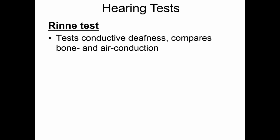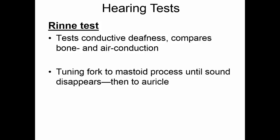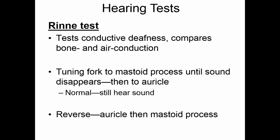The Rinne test is another test for hearing. It tests for conductive deafness by comparing bone conduction with air conduction. You place the handle of the tuning fork against the mastoid process and leave it there until you no longer hear sound, then move it to your auricle. If you still hear sound, you have normal hearing. Alternatively, start at the auricle and when you no longer hear sound, put the handle on the mastoid process. If you still hear the sound then, you have conduction deafness.